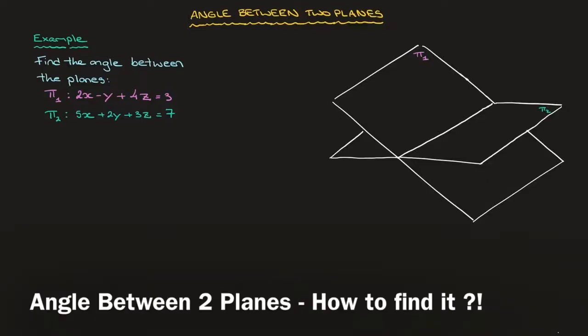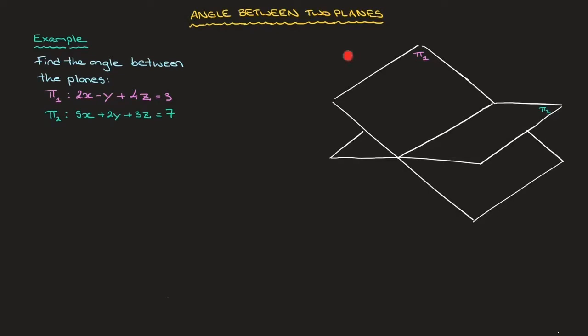Hi everyone, let's learn how to find the angle between two planes. This scenario is illustrated on the right-hand side of the screen. We have two planes, one is called π₁ and the other is called π₂, and we're interested in finding the angle, which I'll call θ, between those two planes.